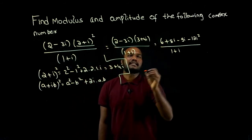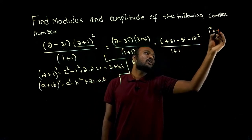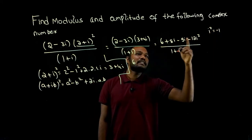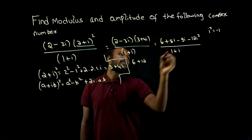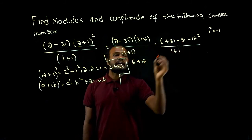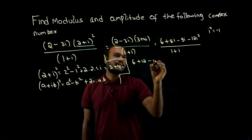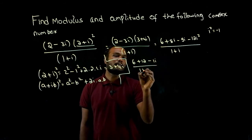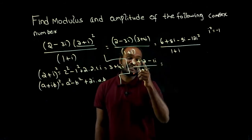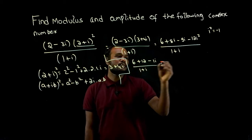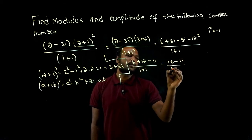Now the i² value is minus 1, so minus into minus is plus, giving 6 plus 12 equals 18. Then 8i minus 9i gives minus 1i. In the denominator we have 1 plus i. So this simplifies to 18 minus i, divided by 1 plus i.